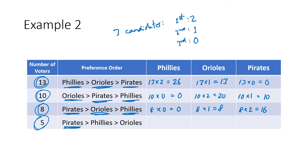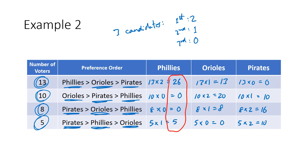Five voters like the Pirates the best, so that's five times two, which is 10. Phillies are second, worth one point each, so five times one is five. Orioles are in last place, so five times zero is zero. Now we add up all the totals: Phillies get 26 plus 0 plus 0 plus 5, which works out to be 31. Orioles get 13 plus 20 plus 8 plus 0, which is 41. Pirates get 0 plus 10 plus 16 plus 10, which is 36.